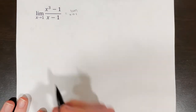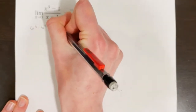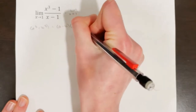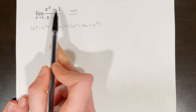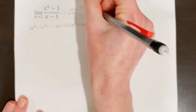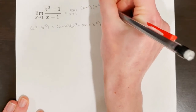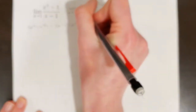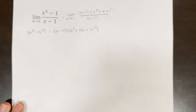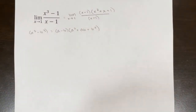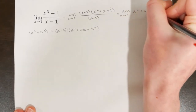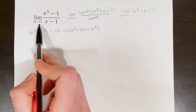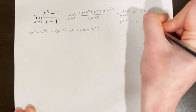To factor the next example, we'll use the difference of cubes: a cubed minus b cubed equals a minus b times a squared plus ab plus b squared. With a being x and b being 1, the numerator factors into x minus 1 times x squared plus x plus 1, and the denominator is x minus 1. We cancel the common factor x minus 1, leaving the limit as x approaches 1 of x squared plus x plus 1. Using direct substitution: 1 squared plus 1 plus 1 equals 3.